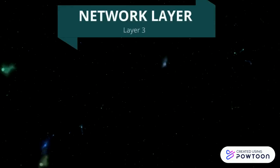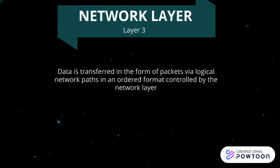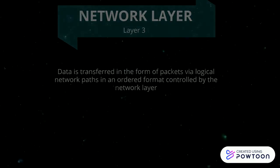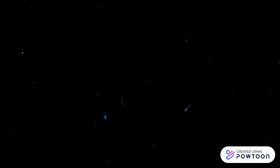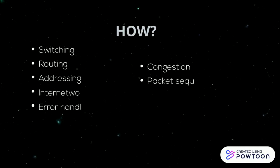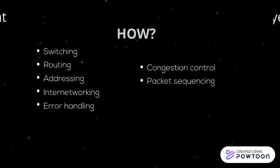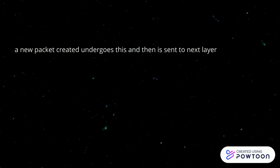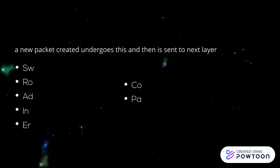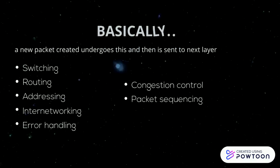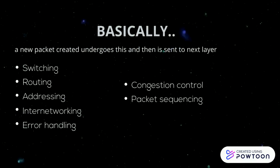In the network layer, data is transferred in the form of packets through logical network paths in an ordered format. This process is managed through specific procedures: a new packet is created and monitored to handle its errors, sequencing, and congestion control.